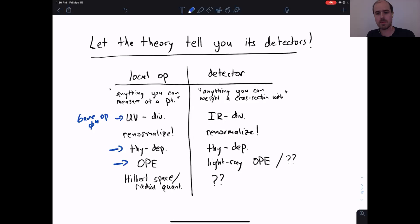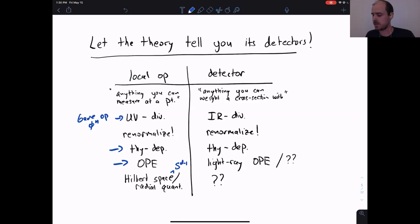Once you accept that there's some space of good local operators that are well-defined, it reveals beautiful structure — like the operator product expansion. One nice thing about local operators in conformal field theories is that we have a non-perturbative understanding of that space: they can be characterized as the Hilbert space of the theory on S^(D-1), which is the radial quantization point of view. This non-perturbative characterization gives confidence that systematically renormalizing UV divergences yields objects that are non-perturbatively well-defined.